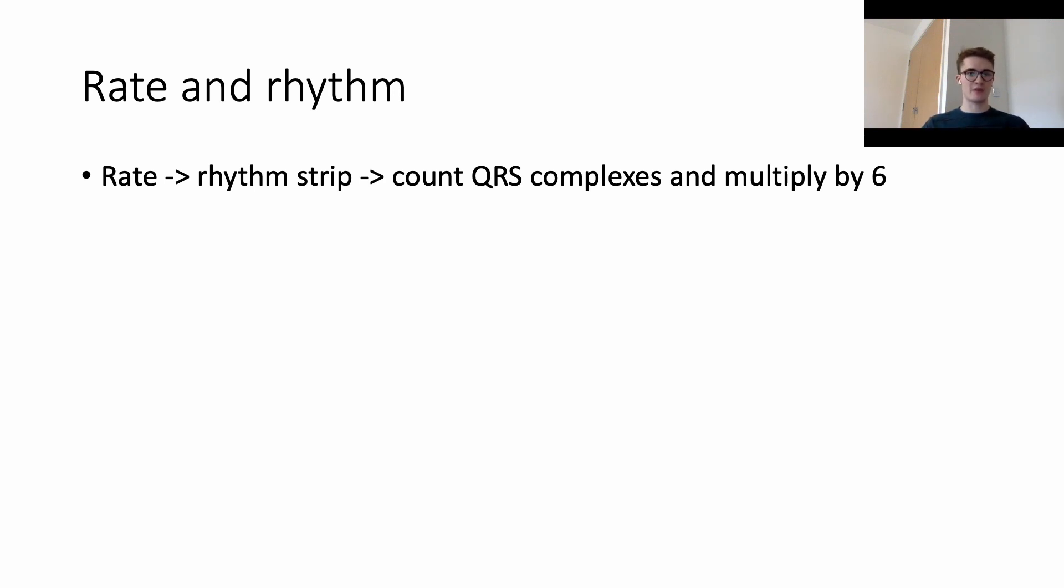The number of QRS complexes is a direct correlate to the number of pulses you would feel in your wrist or anywhere else in the body. So we're going to count the number of QRS complexes in that 10 second recording, the rhythm strip, and multiply that number by six to get the number of QRS complexes in 60 seconds. That will be our heart rate in beats per minute.